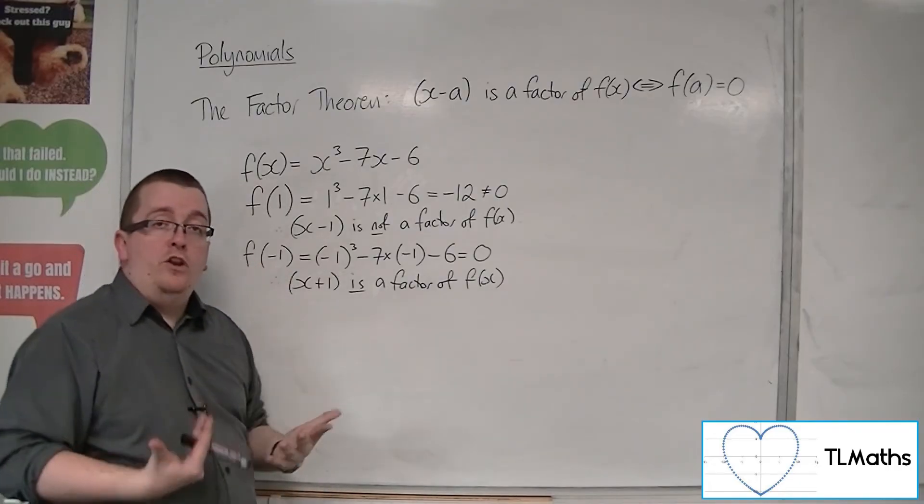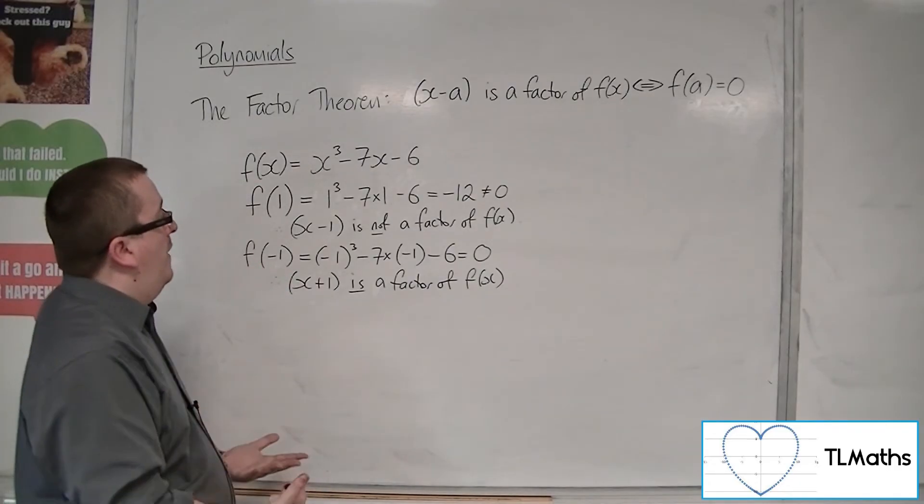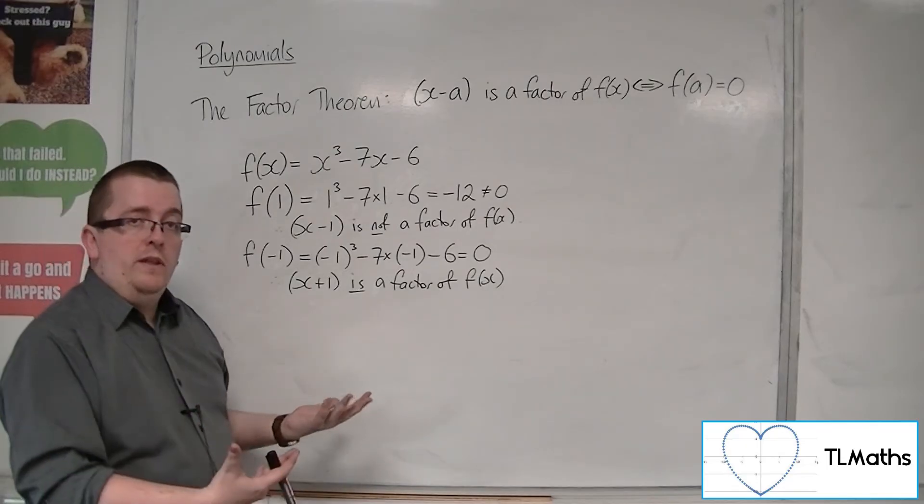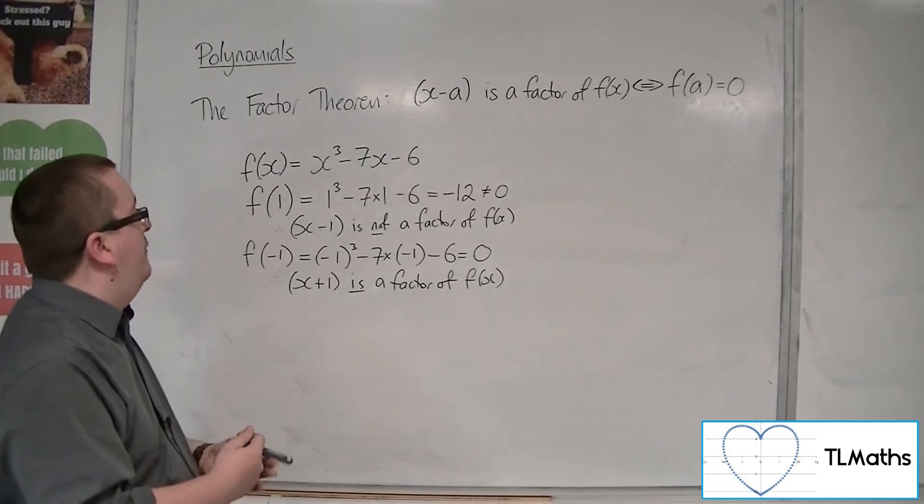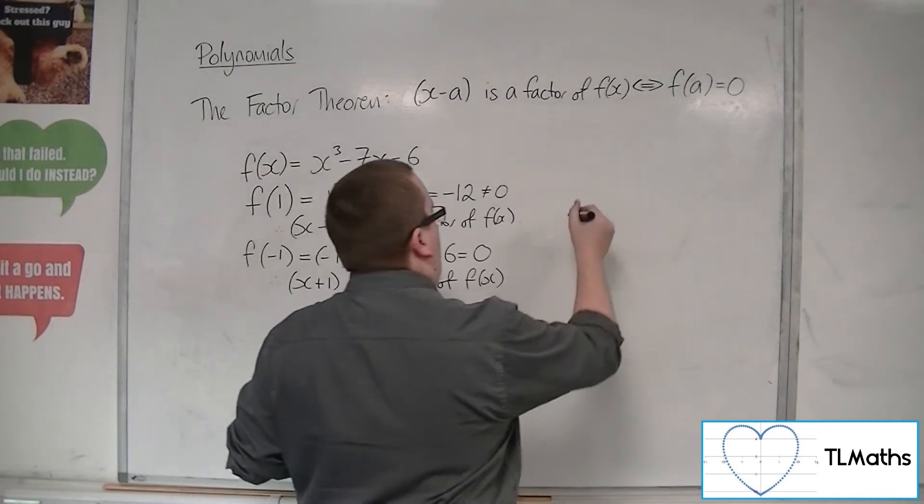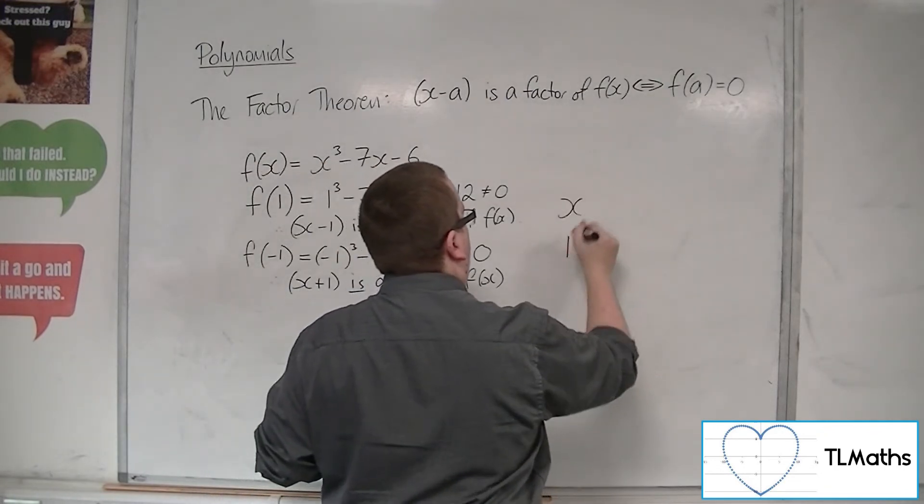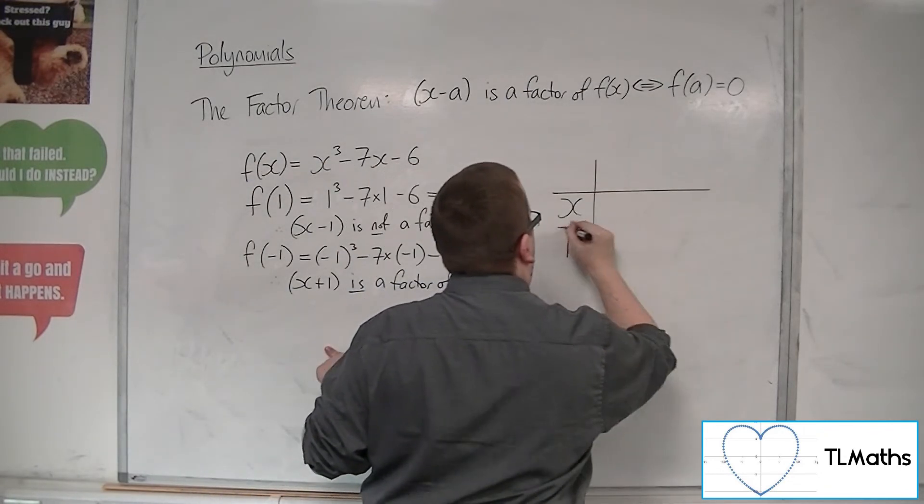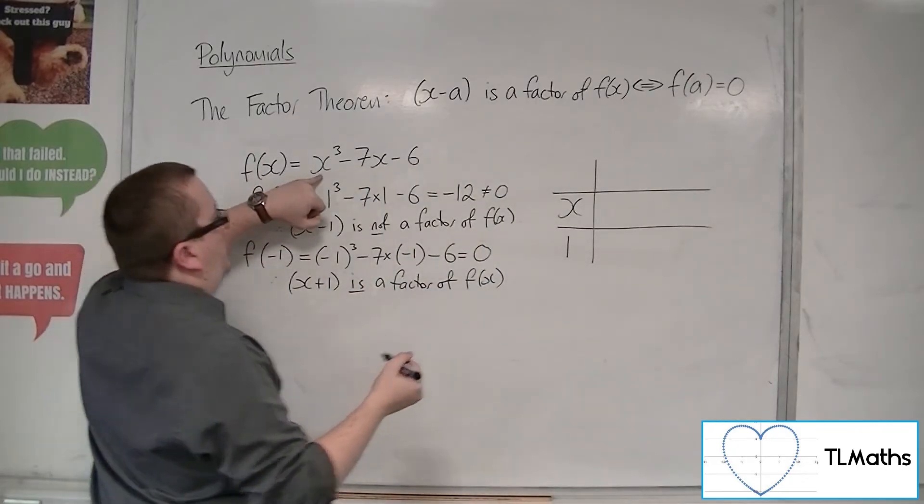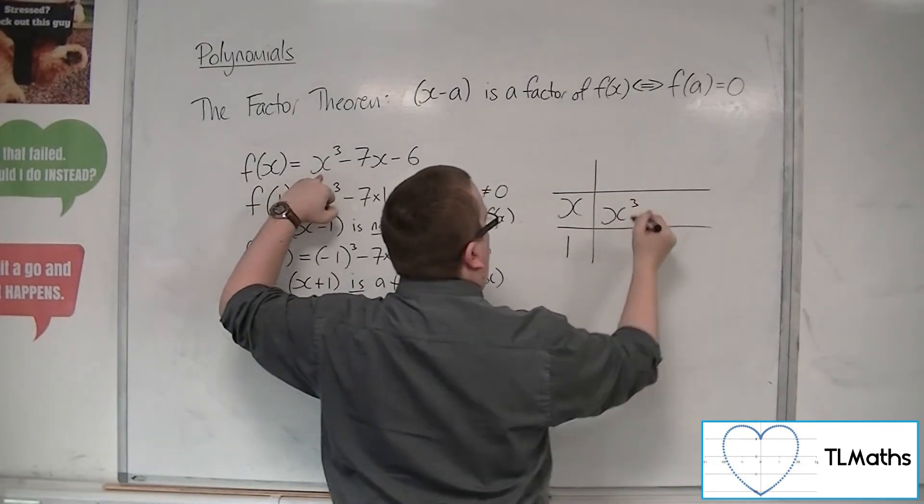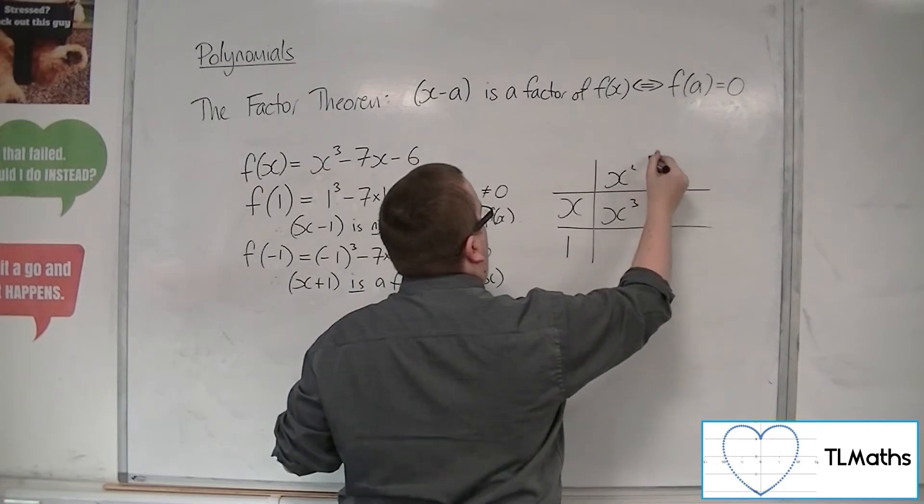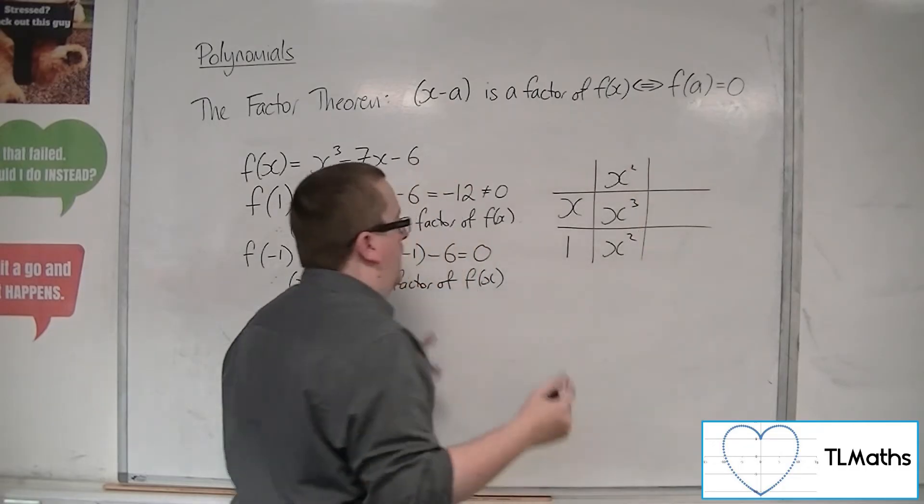Then you can use polynomial division to find what you're left with. So x plus 1, down the left-hand side. Now we want x cubed, so that will be x cubed. So we'd have x squared there, so that's 1x squared.